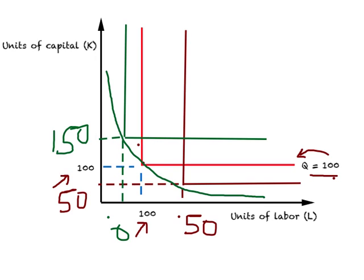So remember: if there is only one technology available, you will have an L-shaped isoquant. If you have two technologies available, there might be some gaps in the isoquant. And if you have a number of technologies available, what you will get is a continuous isoquant.